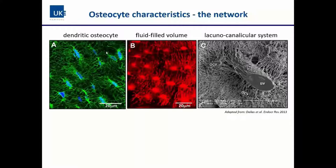The fluid-filled volume surrounding the osteocyte is called the peri-lacunar and peri-canalicular space. The lacuna is where the osteocyte cell body sits, and the canalicular space is where the dendrites extend. From the right image using an acid-etch technique in electron microscopy, you can see osteocytes deeply connected with one another and also with blood vessels within this piece of bone.